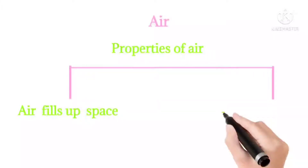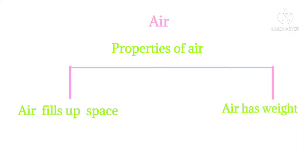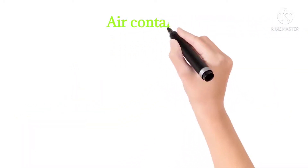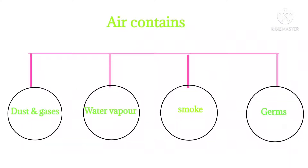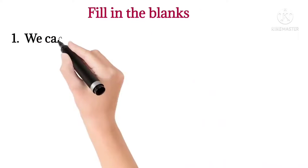As a result, the size of the balloon increases. Next, air has weight. Example: which football will be heavier, a blown-up football or a flat one? A blown-up football would be heavier because it has air. This shows that air has weight. You will learn more properties of air in higher classes. Next, what does air contain? Air contains dust and gases — gases like oxygen, hydrogen, carbon dioxide, etc. — as well as water vapor, smoke, germs, etc.